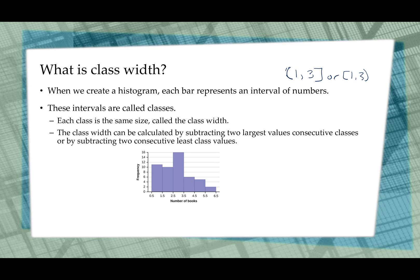To determine the class width, we calculate it by subtracting either two largest consecutive classes or the smallest. So it depends on what's included. If the least values are included, we subtract the least values. If the largest values are included, we subtract the largest value. So in this example, we would subtract 0.5 from 1.5 to determine the class width.